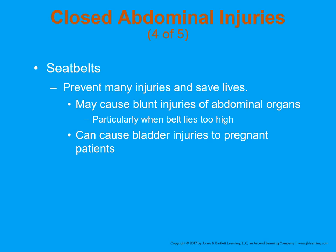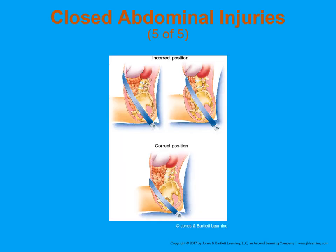Seatbelts in motor vehicle collisions can cause significant injury, though they certainly prevent more injuries than they cause. Some injuries, particularly from incorrectly placed lap belts, can cause bladder injuries — especially in pregnant women or people with full bladders who are in a crash. The lap belt should go over the iliac crest for maximum support and protection. Anything incorrectly placed, like putting the belt too low, could cause damage and injury.